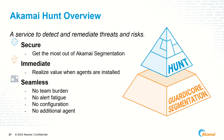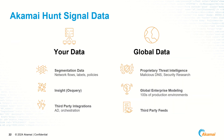Akamai Hunt is a managed threat hunting service that overlays on your existing AGS infrastructure and aligns to Forrester's zero trust pillar of comprehensive security monitoring. Hunt combines your existing AGS environment data with Akamai's massive global threat intelligence, then leverages the expertise of Akamai research teams, security analysts, and AI. The service continuously hunts for anomalous attack behavior, network misconfigurations, and advanced threats that consistently bypass even the most cutting-edge security solutions.